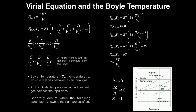So in general, for most situations, any term past the B over the molar volume term — which includes C, D, E, and so on — those are going to contribute so negligibly that under most conditions we can just neglect them. In fact, in a lot of cases, you normally truncate the series either after the B term or after the C term.